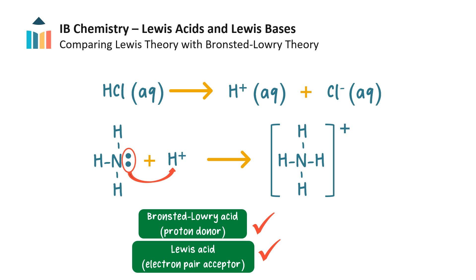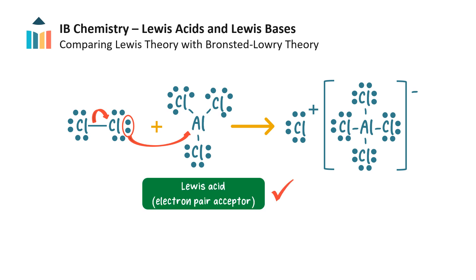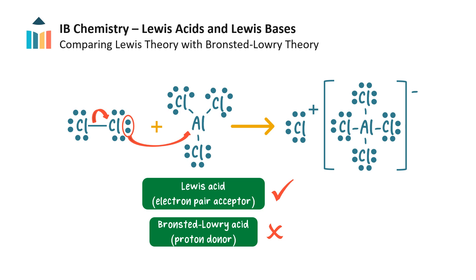But not all Lewis acids are Bronsted-Lowry acids, since some Lewis acids do not donate protons. We can see that in this reaction: aluminium in aluminium chloride has a vacant orbital and can accept a pair of electrons from chlorine to fill its octet, so aluminium chloride is a Lewis acid. But it has no protons to donate, and so aluminium chloride is not a Bronsted-Lowry acid.